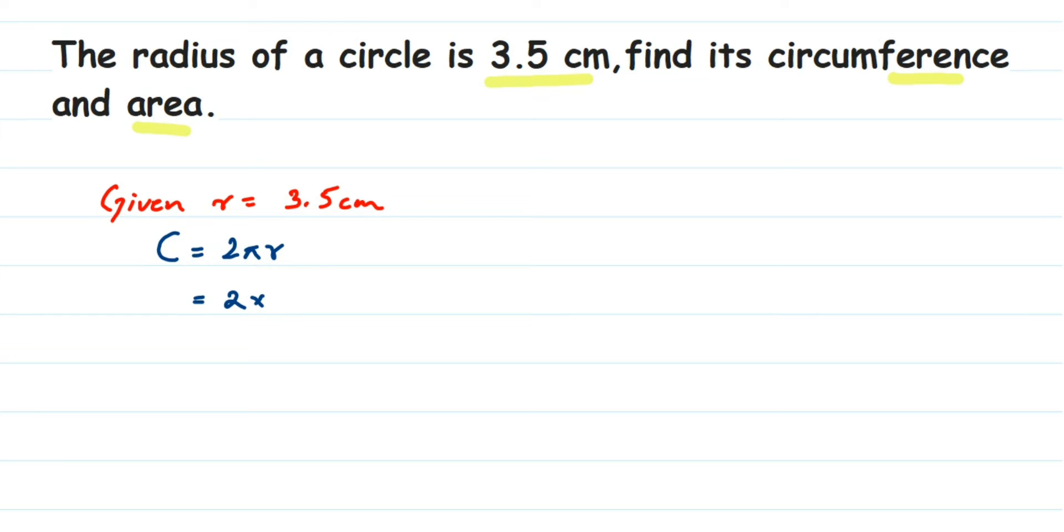Pi value here I'm going to take it as 22/7 because the numbers will get cancelled, multiplied by the r value which is 3.5. Now before cancelling, if you see we have 3.5, we can cancel 7 and 3.5 directly. You will get 0.5. 7 goes once and when you cancel 3.5 you will get 0.5 and you can solve it further, or else you can remove the decimal place here.